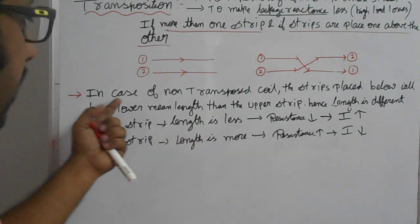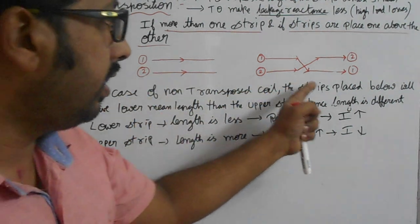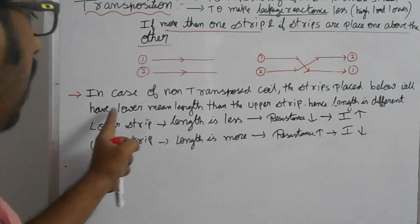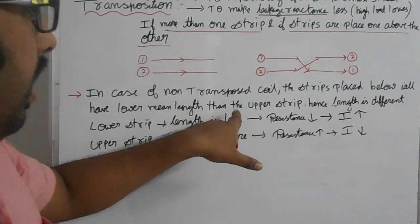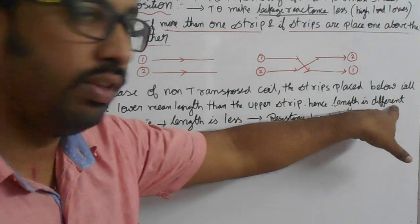In case of non-transposed coil, the strips placed below will have the lower mean length than the upper strips. Hence, length is different.